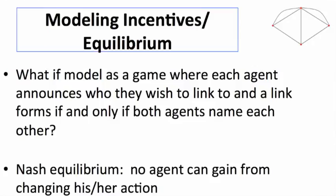One way people might think of modeling this would be modeling it as a game. The simplest possible game you can imagine is everybody just announces who they want to be friends with, and then if both people announce each other, we form a friendship between them. If they don't both announce each other, then we don't form a friendship.